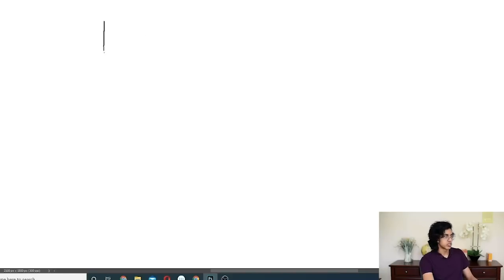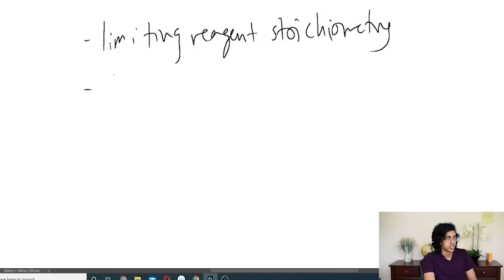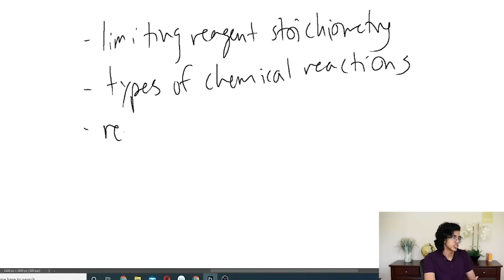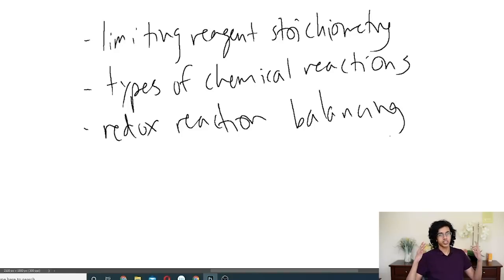Hello everybody, I'm Karara, and today we're going to be covering the harder parts of Unit 4. Specifically, we got limiting reagent stoichiometry, we got types of chemical reactions, and we got redox reaction balancing. Now, of course, I'm going to explain all of these in a lot more detail. So let's get into the limiting reagent stoichiometry.